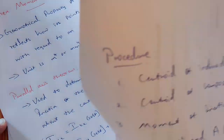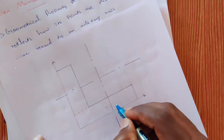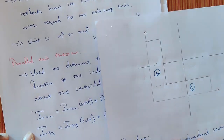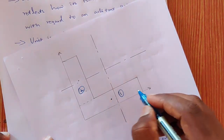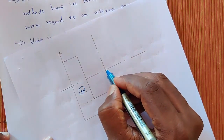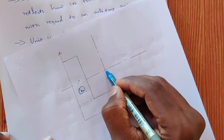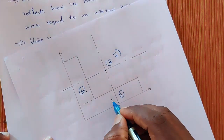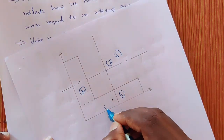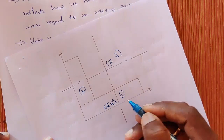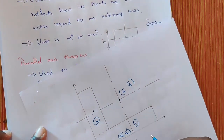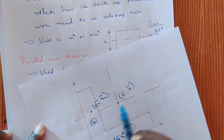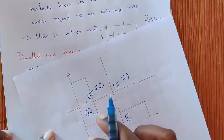Let's take an example composite structure — an L-section. This is section number 1 and this is section number 2. This is the centroidal point for the first section. When I calculate the centroidal axis for the composite structure, this will be x-bar and y-bar for the overall section, that is the combination of sections 1 and 2. When you calculate the centroidal axis for section 1 alone, that gives x1-bar and y1-bar. Similarly, for section 2, this will be x2-bar and y2-bar. The x-bar and y-bar will be the common centroid for the composite section.